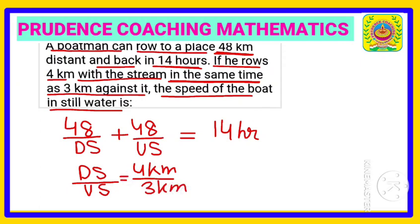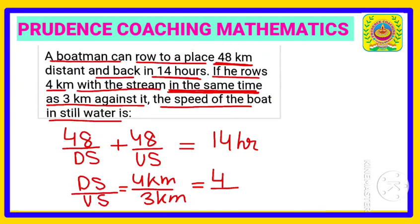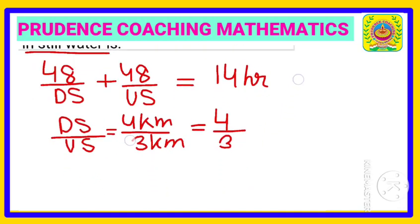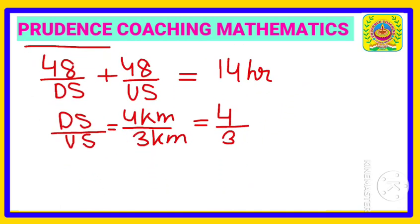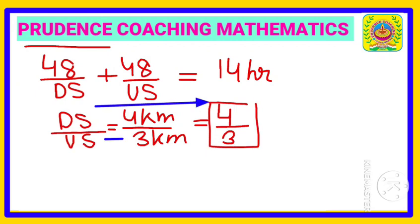Since distance is directly proportional to speed when time is fixed, we can write the ratio of speeds as 4:3 — the same as the distance ratio. So downstream speed : upstream speed = 4 : 3.